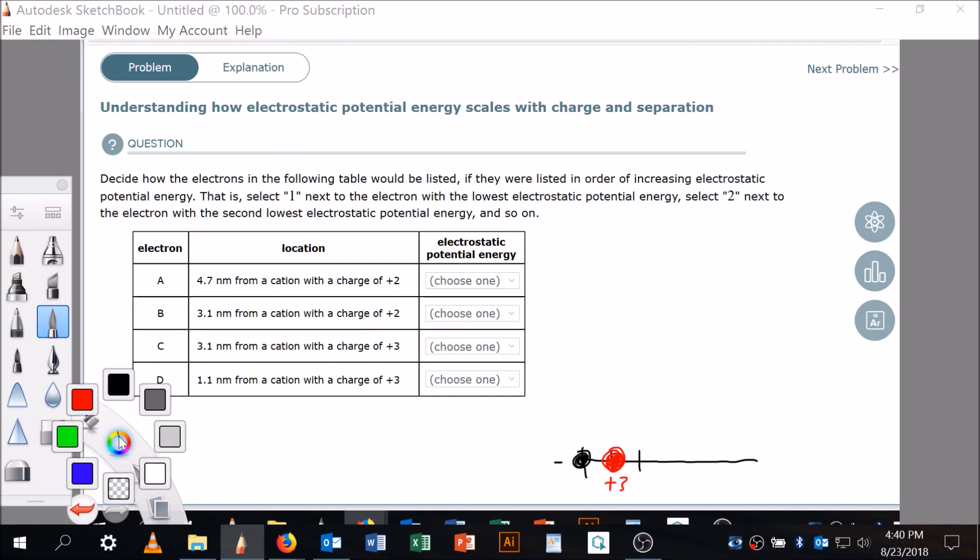Now let's come over here. This one's 3.1: 1, 2, 3.1. A little black electron right here, and it's another plus three. So let me come over here: 1, 2, 1, 1, 2, 3, right about here. Plus three.